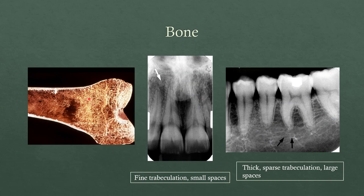Here's a sliced image of bone showing that it can be more thick in some areas than others. The dense cortical bone on the outside — compact bone — is very dense and appears more radiopaque in radiographs. Internally we have marrow spaces and trabeculation, sometimes in a honeycomb pattern. In the maxilla, it's more common to see fine trabeculation with small marrow spaces, while in the mandible, especially in the body, you'll see more thick, sparse trabeculations.